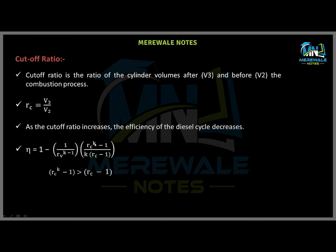When it is not an isothermal process, k equals approximately 1.4 for an adiabatic process. So the numerator part (Rc^k − 1) is greater than the denominator part (Rc − 1). When divided by a value greater than 1, this makes the subtracted fraction larger. So as we increase Rc, this part increases, and hence when we compute 1 minus this quantity, the efficiency directly decreases.